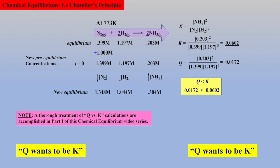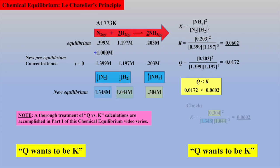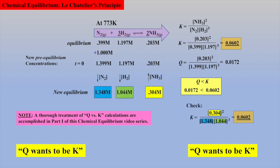In fact, when final equilibrium concentrations were measured, the reactant concentrations did decrease and the product concentration did increase, which confirms our predicted shift toward product. And as a check, the known K value is obtained after the shift.